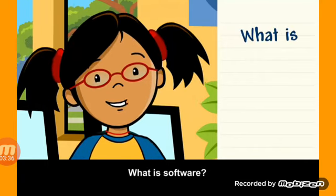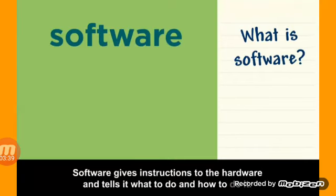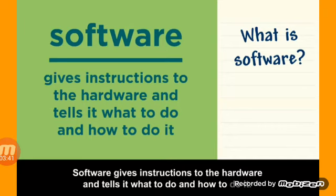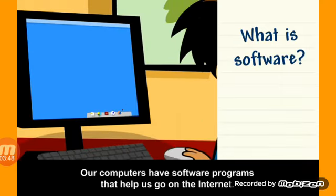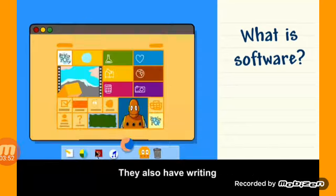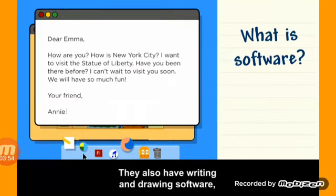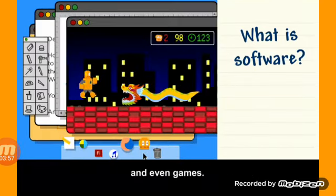What is software? Software gives instructions to the hardware, and tells it what to do and how to do it. Our computers have software programs that help us go on the internet. They also have writing and drawing software, and even games.